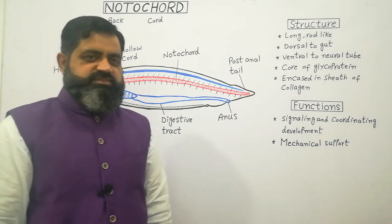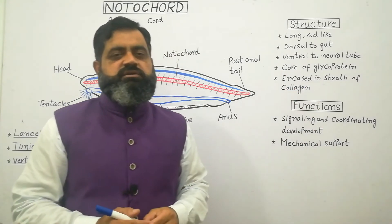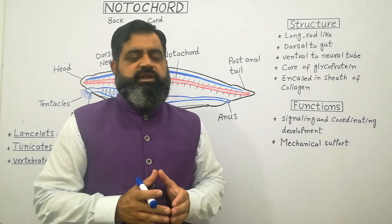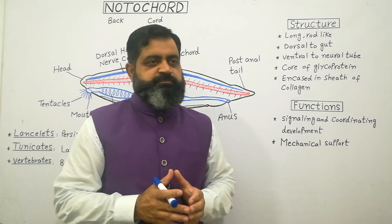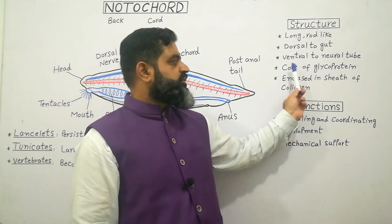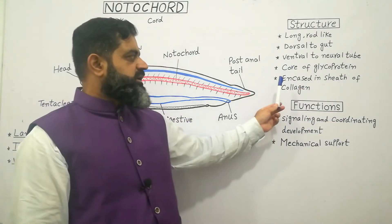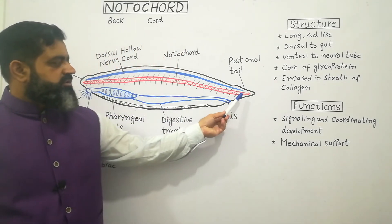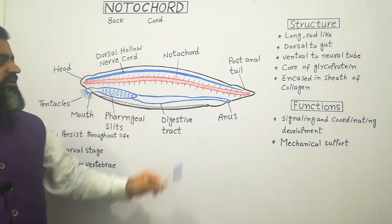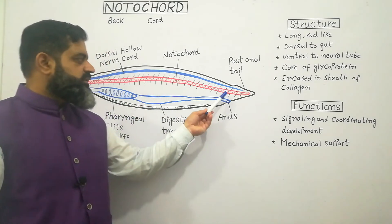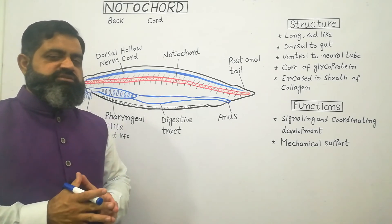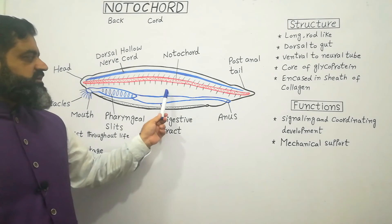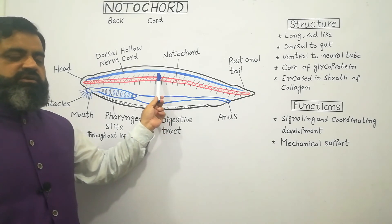Notochord is composed of cells known as a core of glycoprotein. These cells contain large vacuoles filled with proteinaceous material or glycoprotein, which help maintain the flexibility and rigidity of the structure. This core of glycoprotein cells is surrounded and encased in a sheath of collagen protein, forming a cartilage-like structure. So the outer layer is collagen while the inner segment consists of large vacuolated cells filled with glycoprotein, extending from anterior to posterior, located dorsal to the digestive system and ventral to the nervous system.